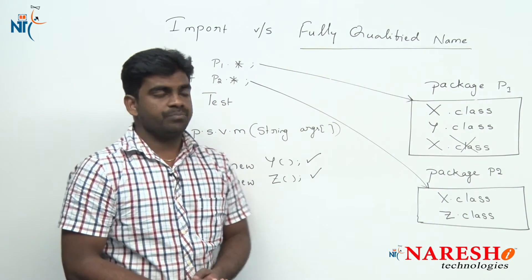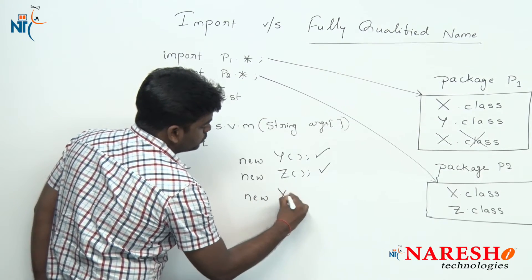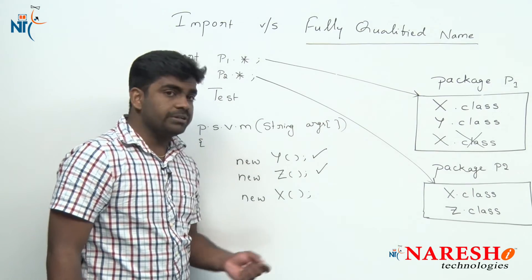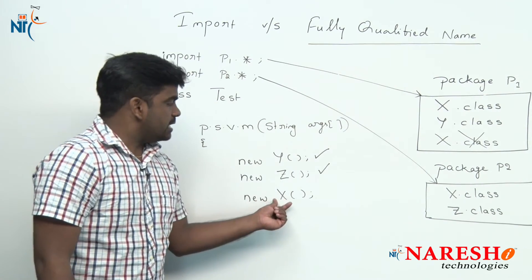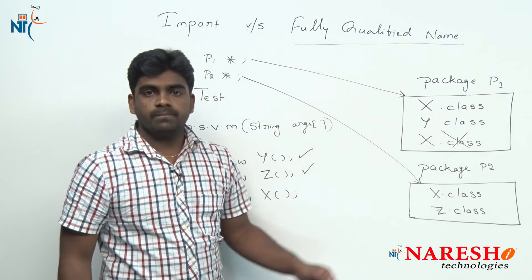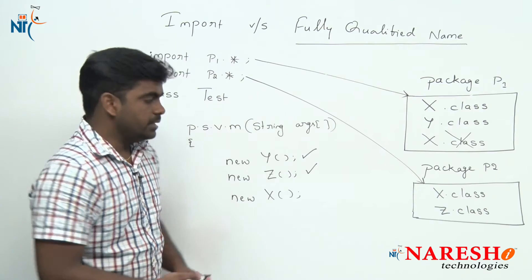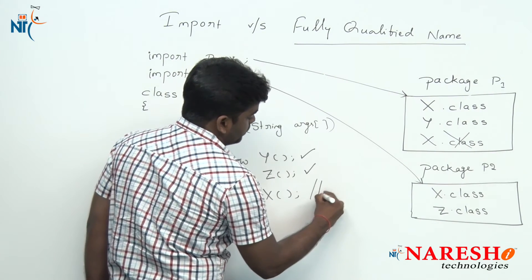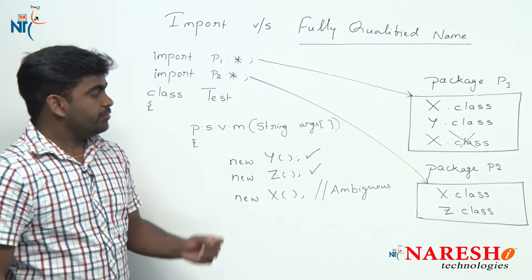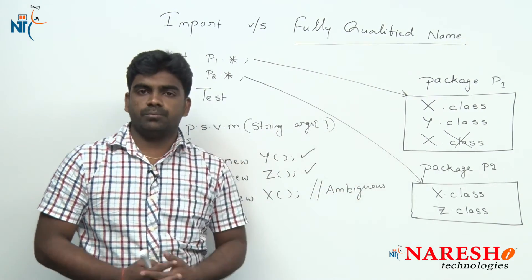But whenever we try to create an object for X class, it gets confused. The class loader cannot determine from where to collect X class — from package p1 or from package p2. It cannot understand, so it gives an error. That is ambiguous — there is a collision.